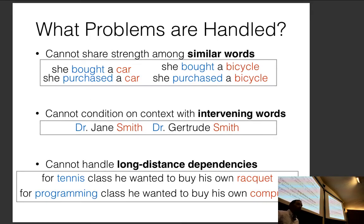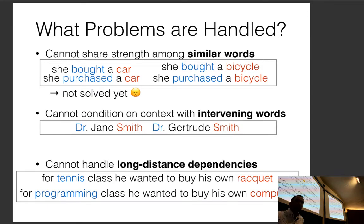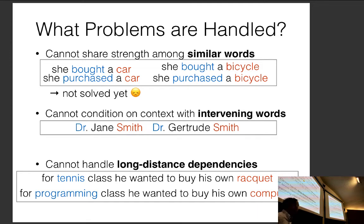Looking at this log-linear language model, what problems have been handled? Unfortunately, this model still can't share statistical strength between similar words. Like the bag-of-words model, all parameters are trained separately — so 'bought' and 'purchased' will have completely different vectors in the parameter matrix.